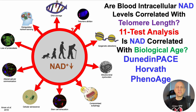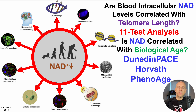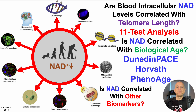which is potentially the best epigenetic clock for measuring or evaluating the epigenetic pace of aging; HorvathAge, which is the best epigenetic clock for asking the question 'how old are you?'; and then PhenoAge, which is a standard clinical chemistry-based biomarker biological age calculator that includes things like albumin, creatinine, glucose, hsCRP, and others.